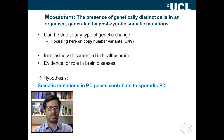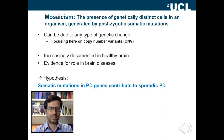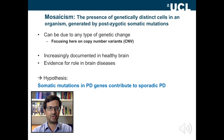Any type of somatic mutation could occur and give mosaicism for that particular type of mutation. Here we're focusing on copy number variants, so situations where a gene or a part of the genome has an extra copy or a missing copy. Mosaicism for CNVs has very recently become documented in several studies of control brain and of disease brain as well.